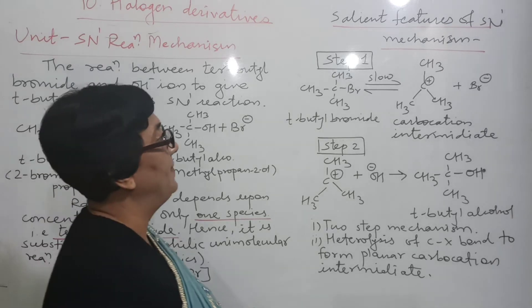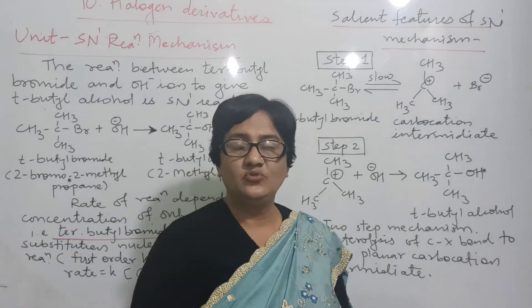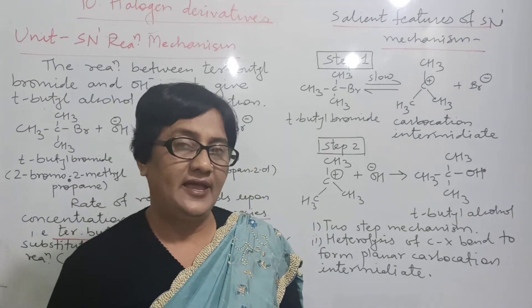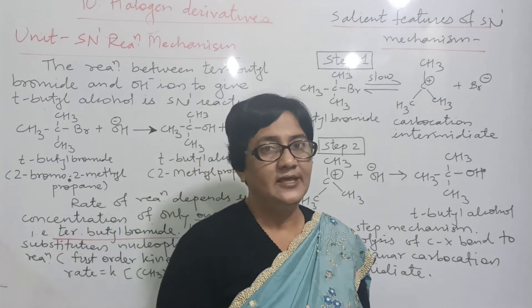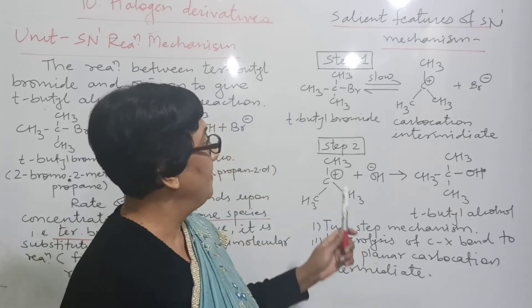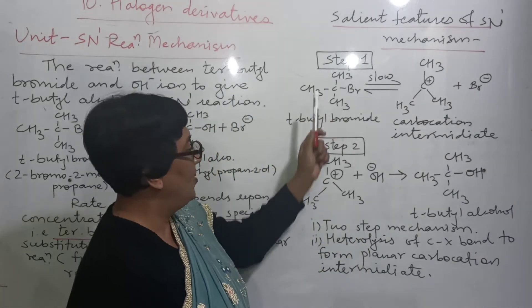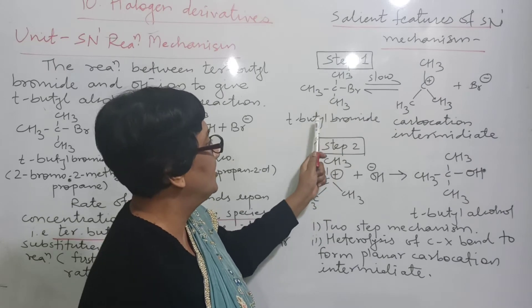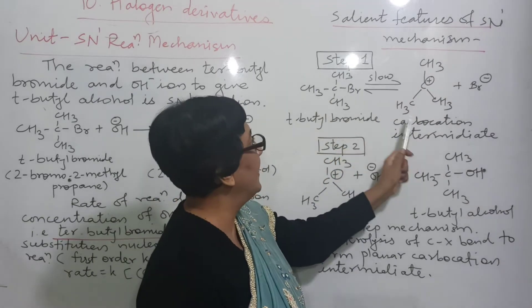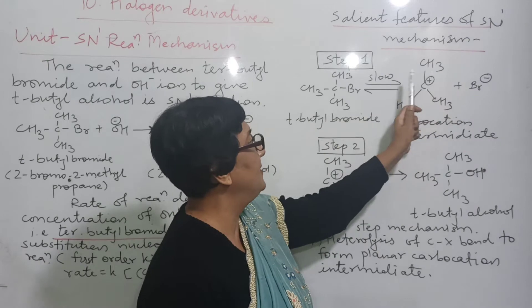Now, the salient features of SN1 mechanism. Here, step 1 and step 2 are formed. In step 1, tertiary butyl bromide gives carbocation. Here, Br is separated. And this is slow step.